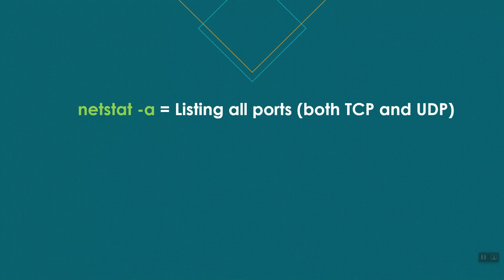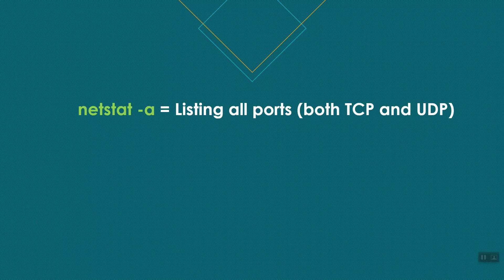First of all, in our server, we use the netstat -a command to display all ports — both TCP and UDP. TCP and UDP are the port types.